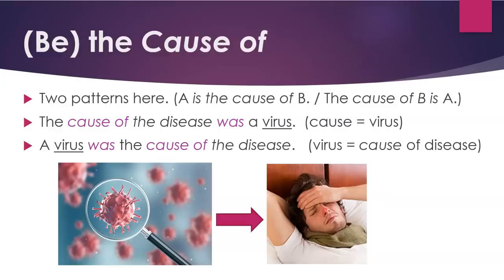Let's look at each of these individually. The pattern 'the cause of' actually has two structures: 'A is the cause of B,' or 'the cause of B is A.' For example, 'the cause of the disease was a virus' — the cause is the virus; this is the noun usage. 'A virus was the cause of the disease' — the virus is the cause of the disease. The only difference is we moved the virus to the beginning of the sentence, but it basically means the same thing.